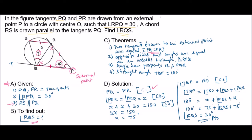According to theorem, angle PQR is equal to angle PRQ, that is equal to X. So X plus X plus 30 degrees is equal to 180 degrees, according to the angle sum property. So 2X is equal to 150, therefore X is equal to 75 degrees.